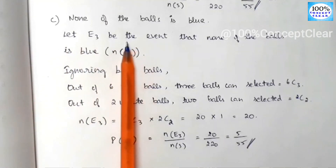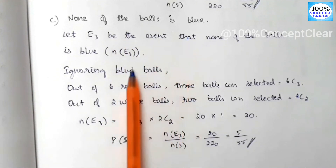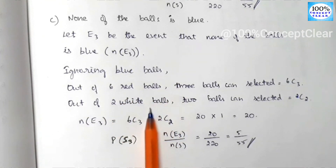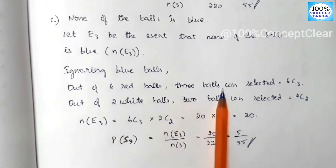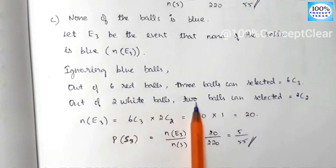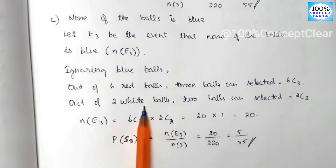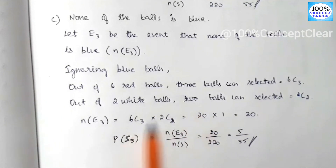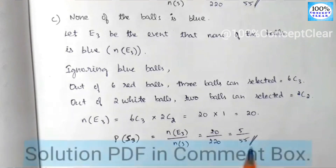For Part C, none of the balls is blue: we ignore blue balls and select from red and white. With 6 red balls choose 3 and 2 white balls choose 2, we get n(E3) = 20, and the probability is 5 by 55.